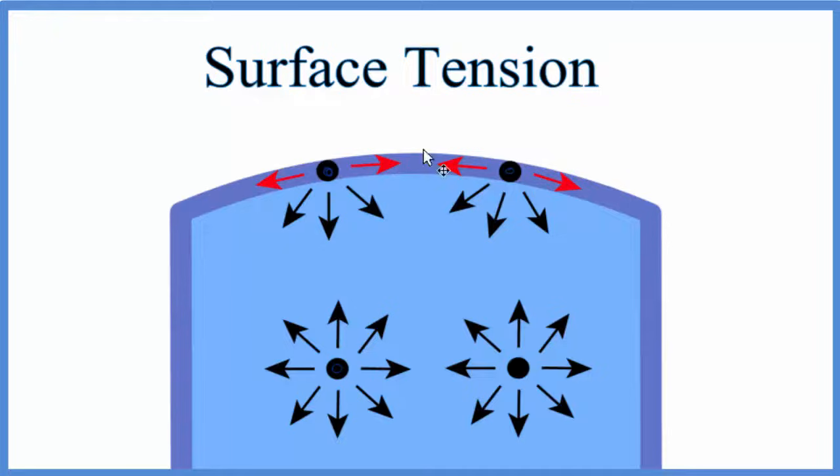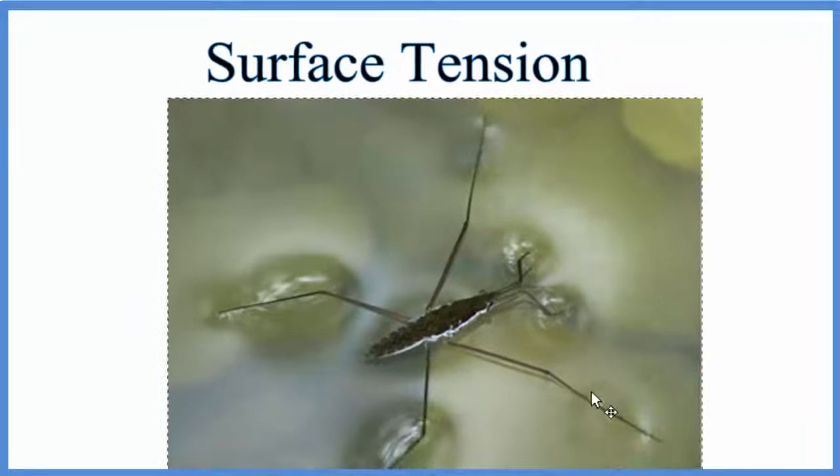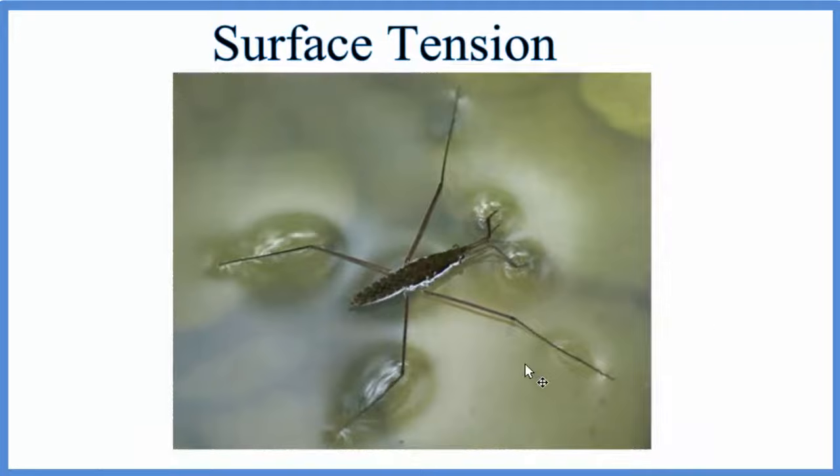Something like this insect here, this water strider, is pushing down. Gravity's pulling it down, but the water is resisting that push because of the surface tension, so it can be on top of the water.